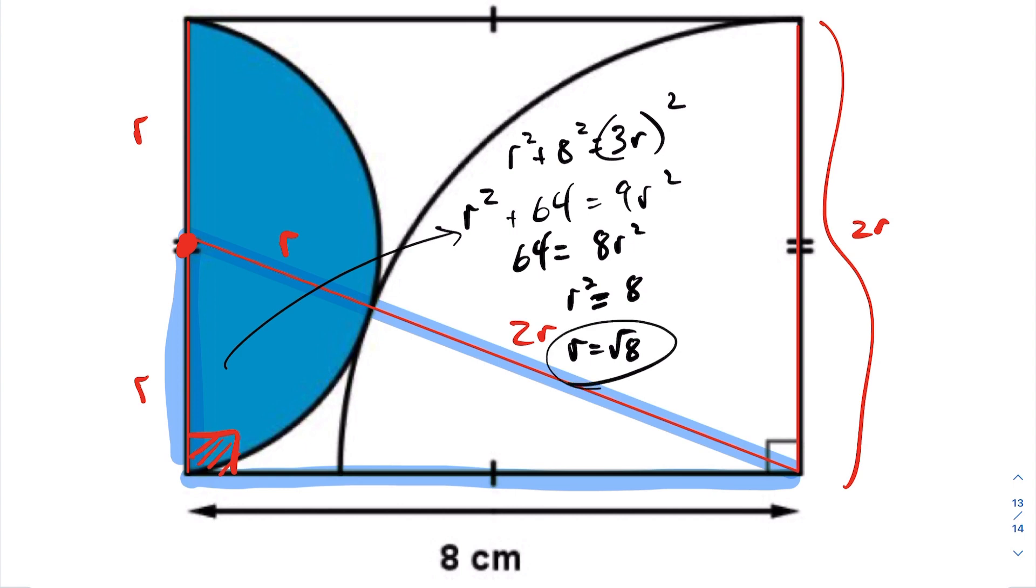So if I want to go ahead and calculate the area of the semicircle here, the area of this semicircle, it will be pi R squared divided by 2, which is pi times root of 8 squared divided by 2, which is in fact equal to 4 pi.